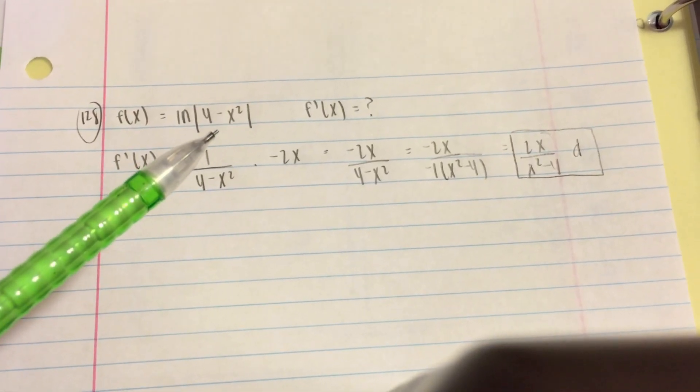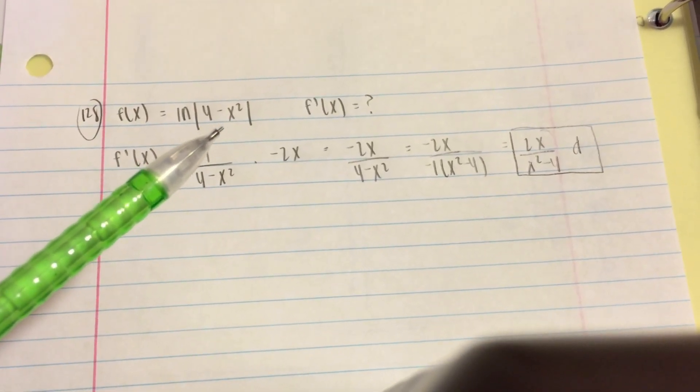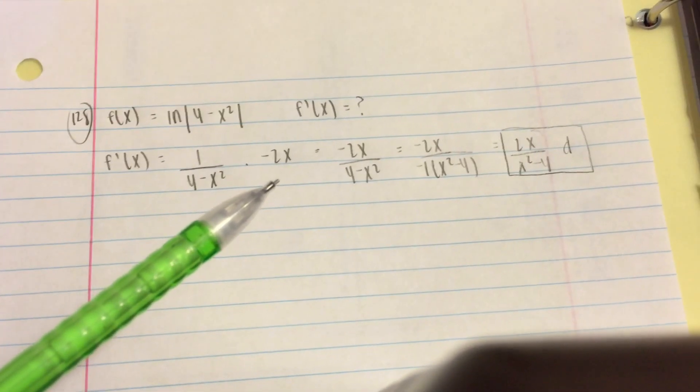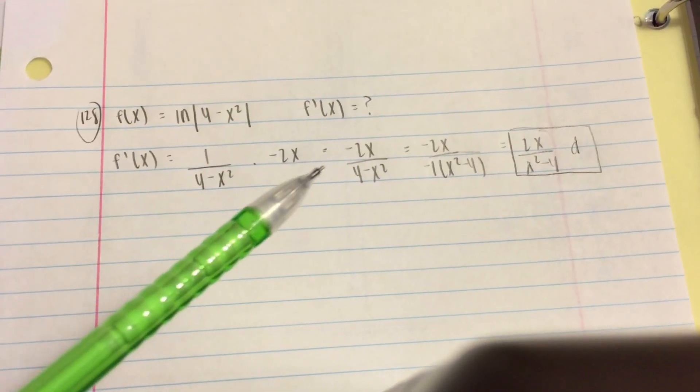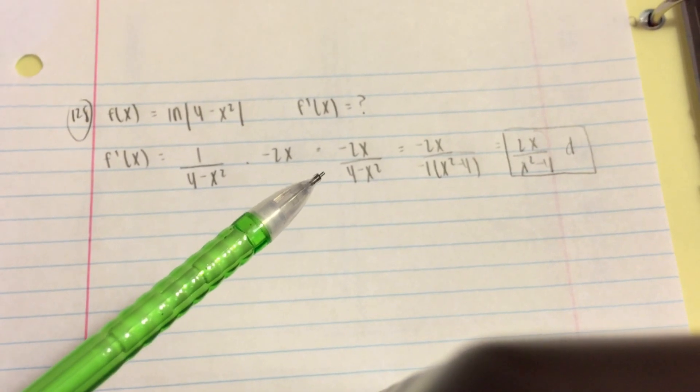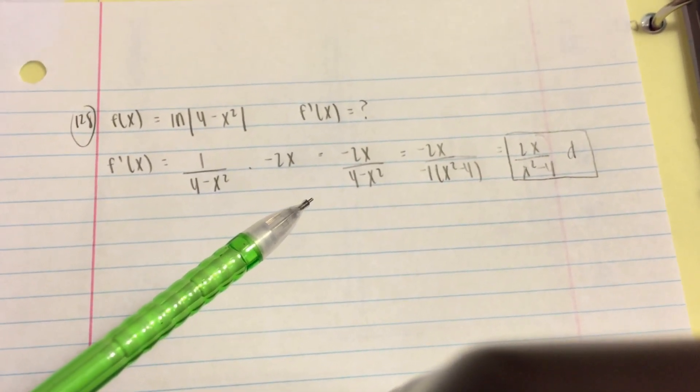The derivative of -x² is -2x. We multiply these two together, which gives us -2x/(4 - x²).